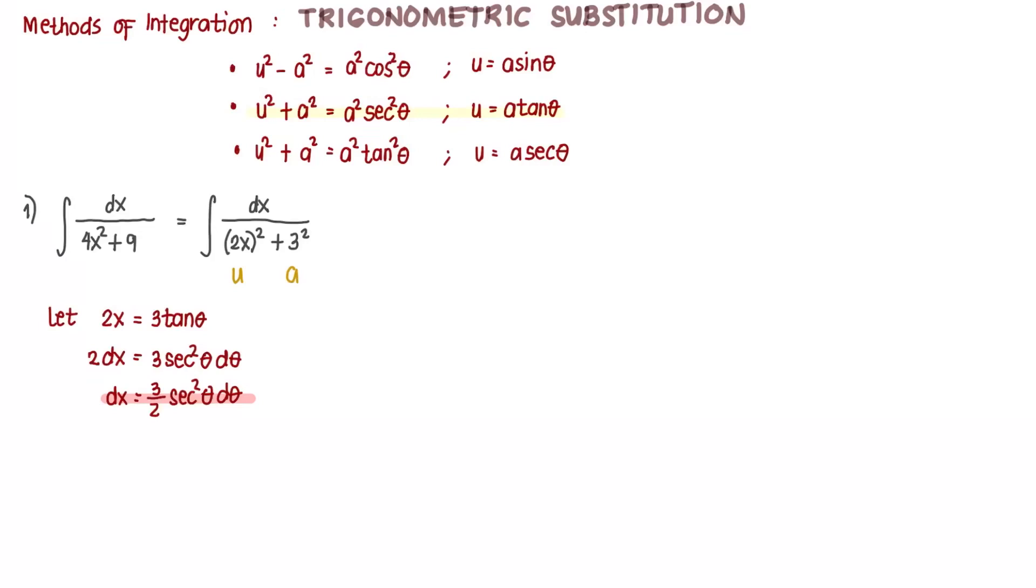So this 4x squared plus 9 is equal to, based on our shortcut we derived from the previous video, that's a squared secant squared theta. So a is 3, we raise that to the power of 2, that will give us 9. So this is 9 secant squared theta.